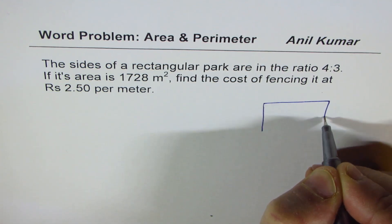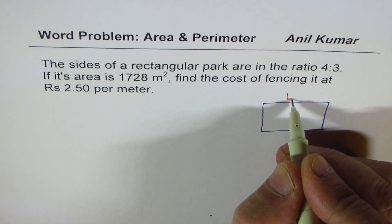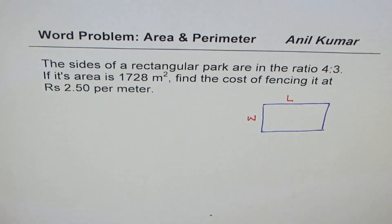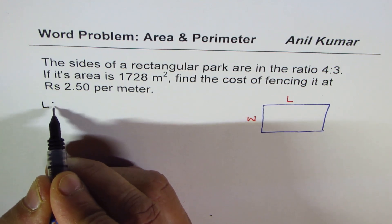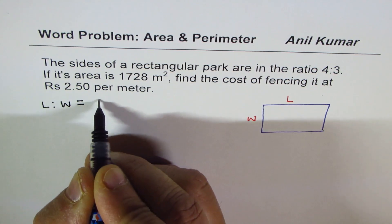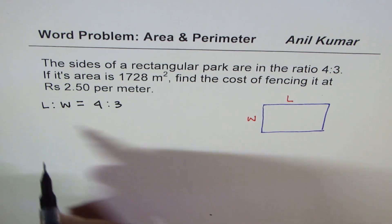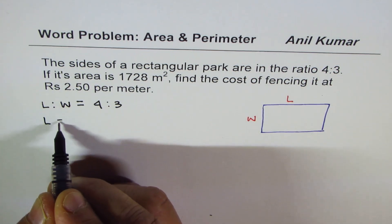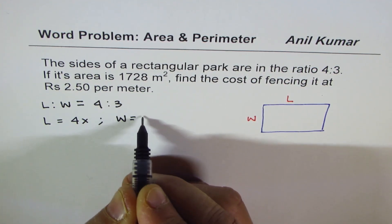Let us say this is the rectangular park and its dimensions are L for length and W for width. So what we are given here is that ratio of length and width is 4 is to 3. So we are given L to W is equal to 4 is to 3.